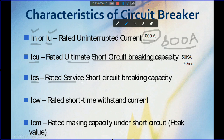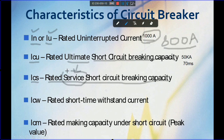The next parameter is ICS — the rated service short circuit breaking capacity — which is almost similar to ICU. The description is the same: short circuit breaking capacity. The only difference is that ICU is 'ultimate' and ICS is 'service,' meaning it is a pre-tested value for the breaker. ICS is less important compared to ICW. We will come back to ICS after discussing ICW in about 5 minutes.